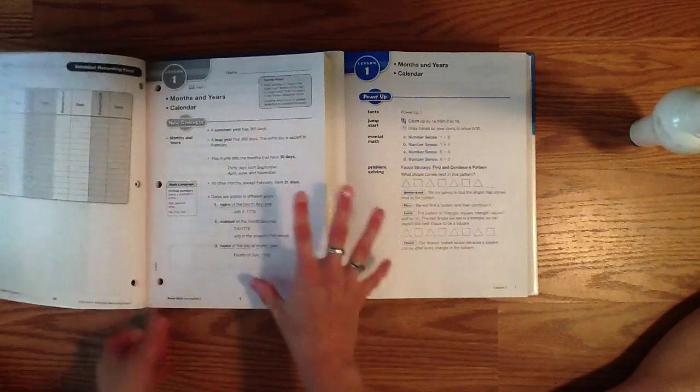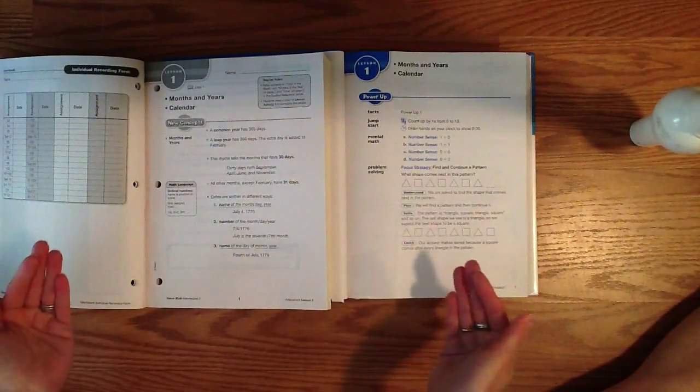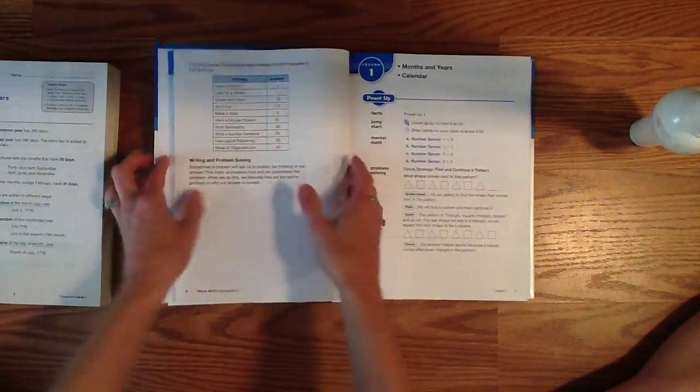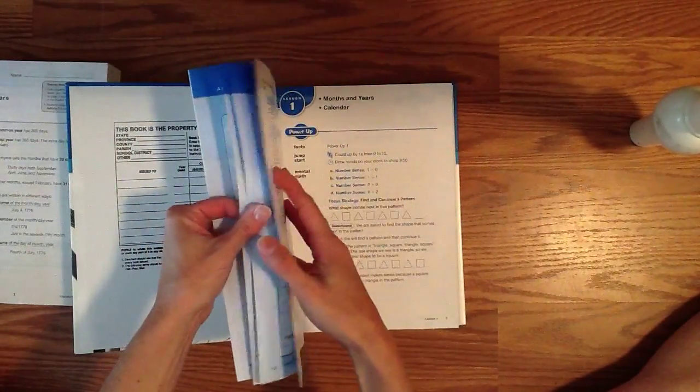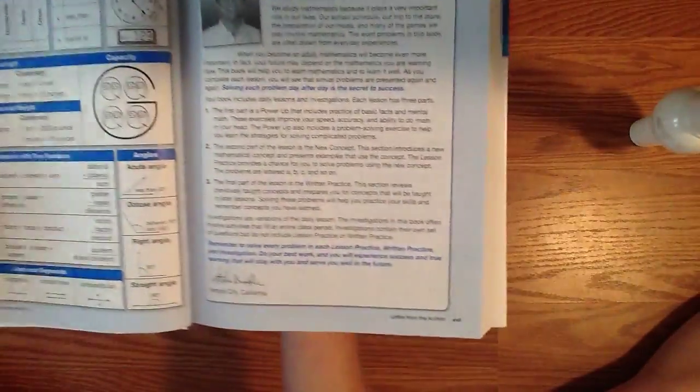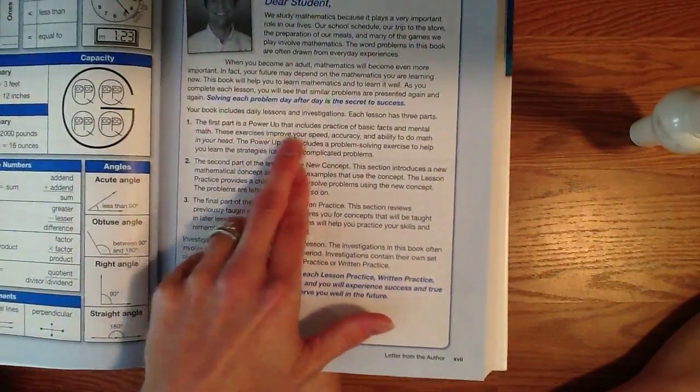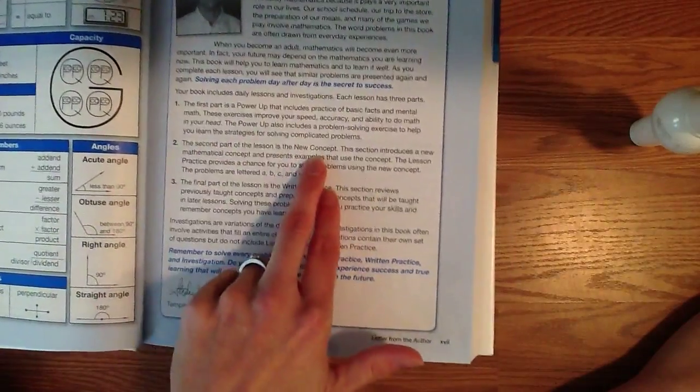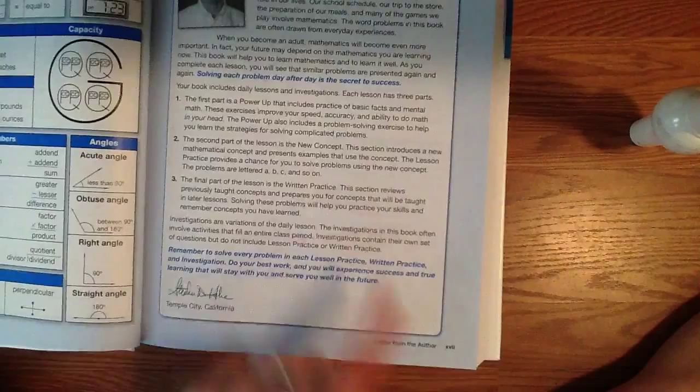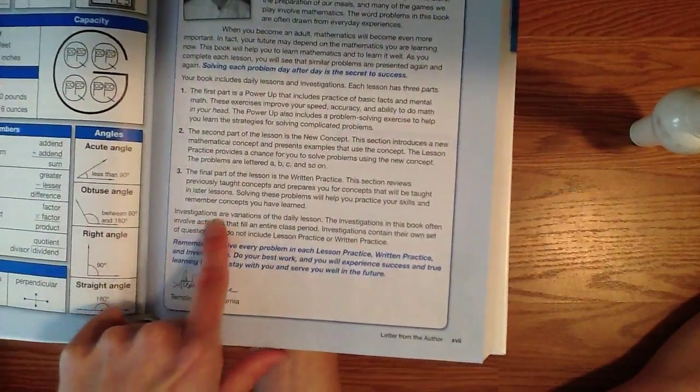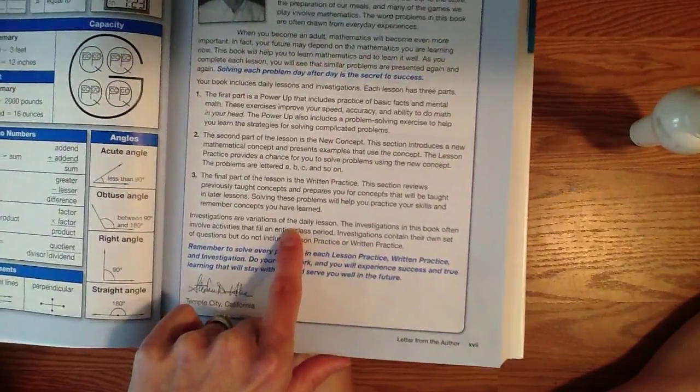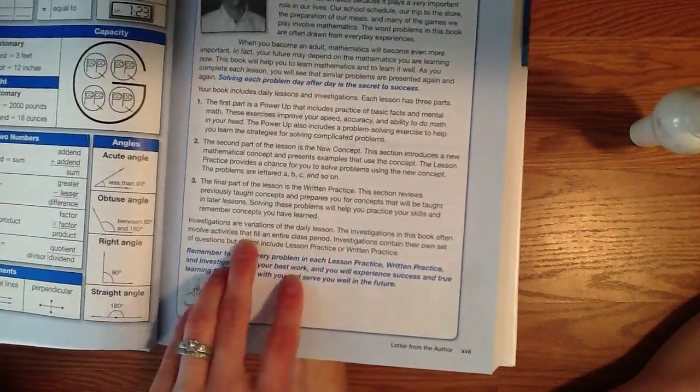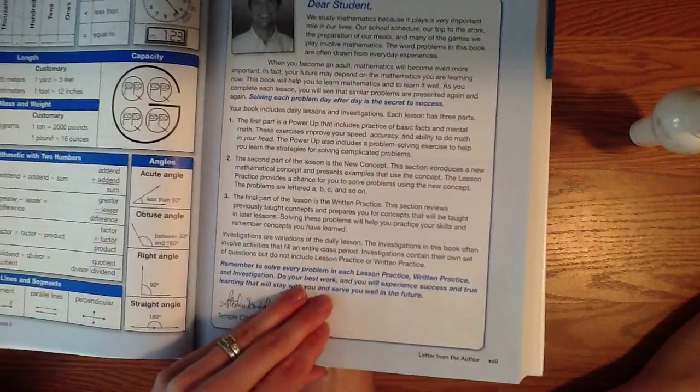Anyhow, the lessons when you get the workbooks - and I believe this is the same throughout most of the grades - is that you'll always start with what they call a power-up activity, and it gives an explanation here at the beginning. The first part of your lesson is going to be the power-up, which includes a practice of basic facts and mental math. The second part of your lesson is going to be the new concept, and then the final part is going to be the written practice. There will also be some investigations that will be thrown in about every eight to ten lessons, and this is going to be more of a lesson that will take your entire day to look at and figure out.